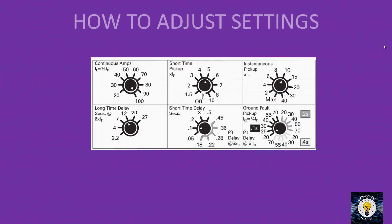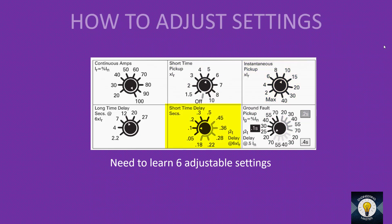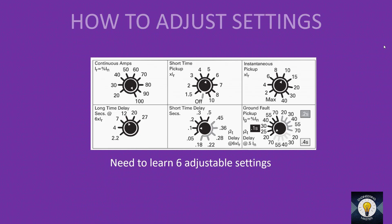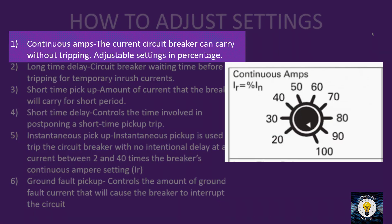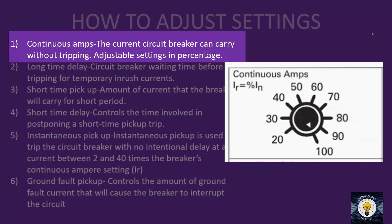The main advantage of MCCB is that we can adjust its settings. There are six types of adjustable settings: continuous amps, short time pickup, instantaneous pickup, ground fault pickup, short time delay, and long time delay. These settings use an adjustable selector switch — you insert a star screwdriver and rotate to different levels. Continuous amps is the current the circuit breaker can carry without tripping, expressed as a percentage from 20% to 100% of the rated current.